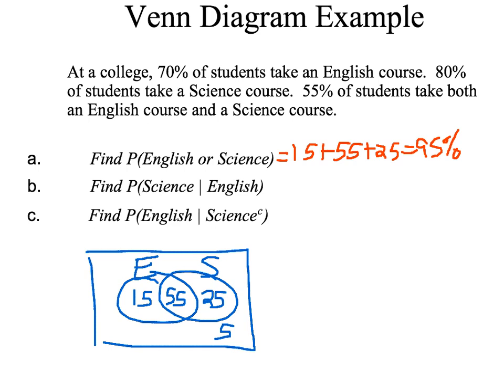Part B says 'science' and there's a vertical bar, then 'English.' The vertical bar means 'given that' — it's a conditional probability. We're going to read part B as: find the probability you are taking a science class given that you are taking an English class. The vertical bar is a conditional 'given that.'